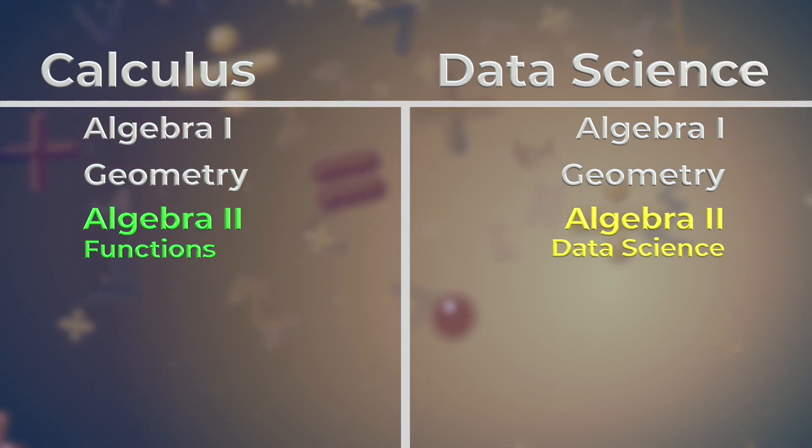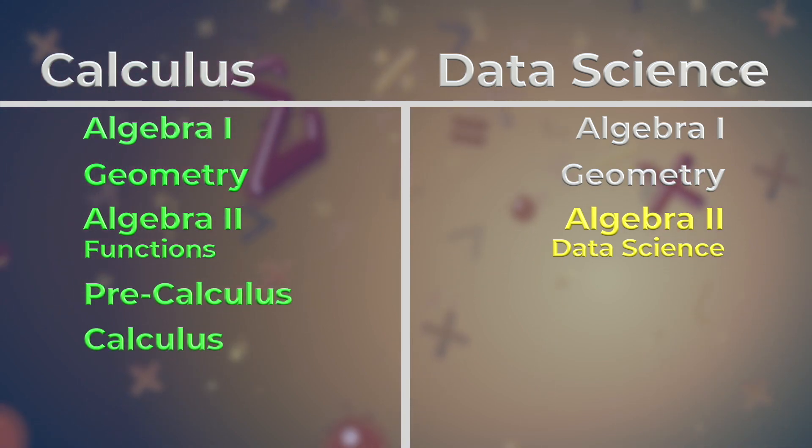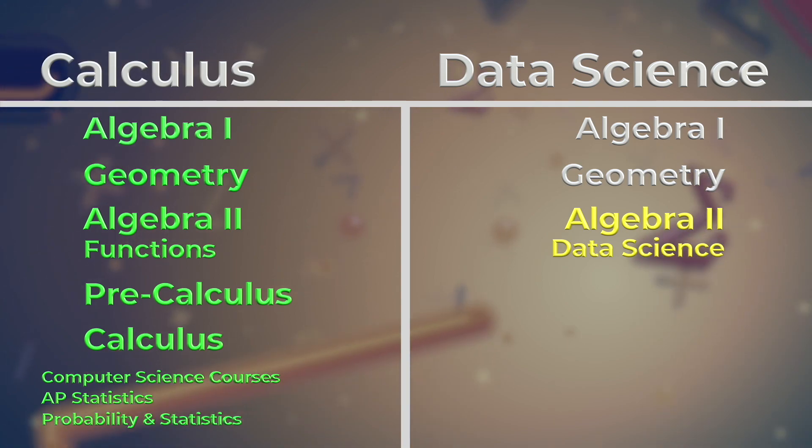Calculus pathway students take Algebra 1 and Geometry. The next class to register for would be Algebra 2 functions, followed by pre-calculus, and then our calculus courses. A calculus pathway student may also take any of the computer science courses, AP statistics, or probability and statistics concurrently.